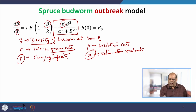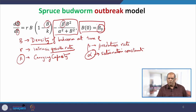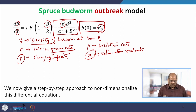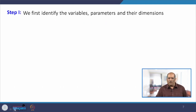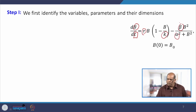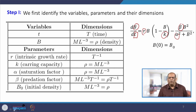T is obviously time, and this is the initial condition: at time t equal to 0, some initial density B-naught of the Spruce Budworm is present. We now give a step-by-step approach to non-dimensionalize this differential equation. Step 1: identify the variables, the parameters, and their dimensions. In the differential equation, B is the dependent variable, t is the independent variable, and R, K, alpha, and beta are the parameters.